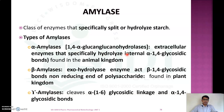Alpha amylase are extracellular enzymes which specifically hydrolyze internal alpha 1,4 glycosidic bonds, and these are mainly found in the animal kingdom. Beta amylase are exohydrolase enzymes that act on beta 1,4 glycosidic bonds on the non-reducing end of polysaccharides, and these are mainly found in the plant kingdom.